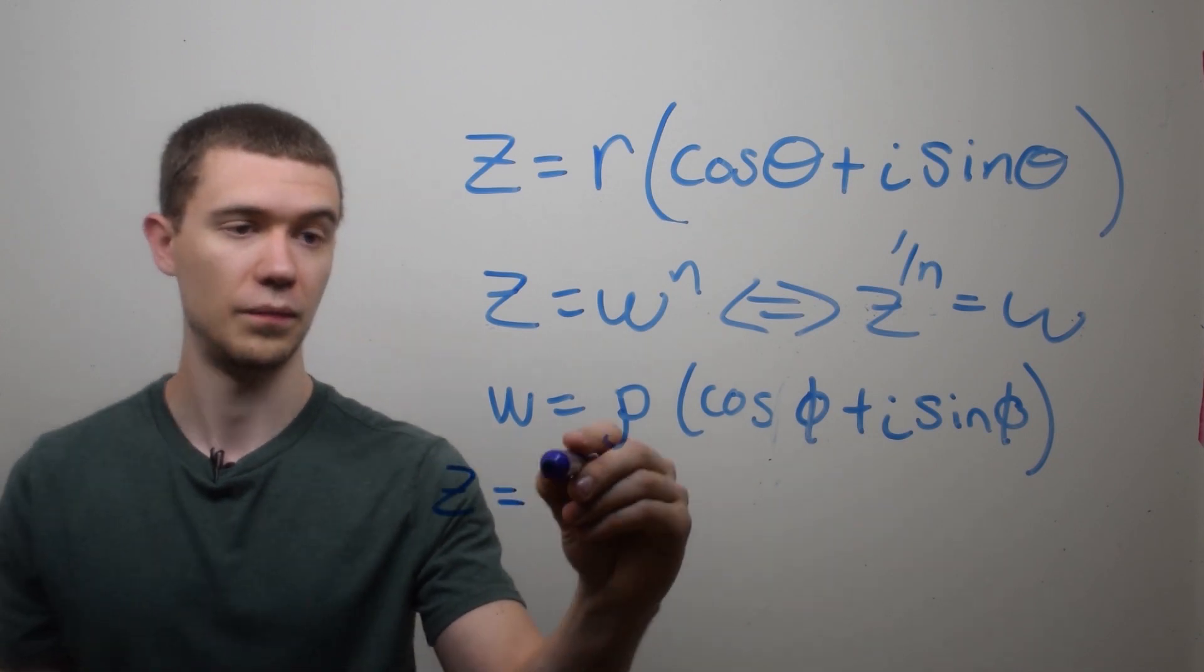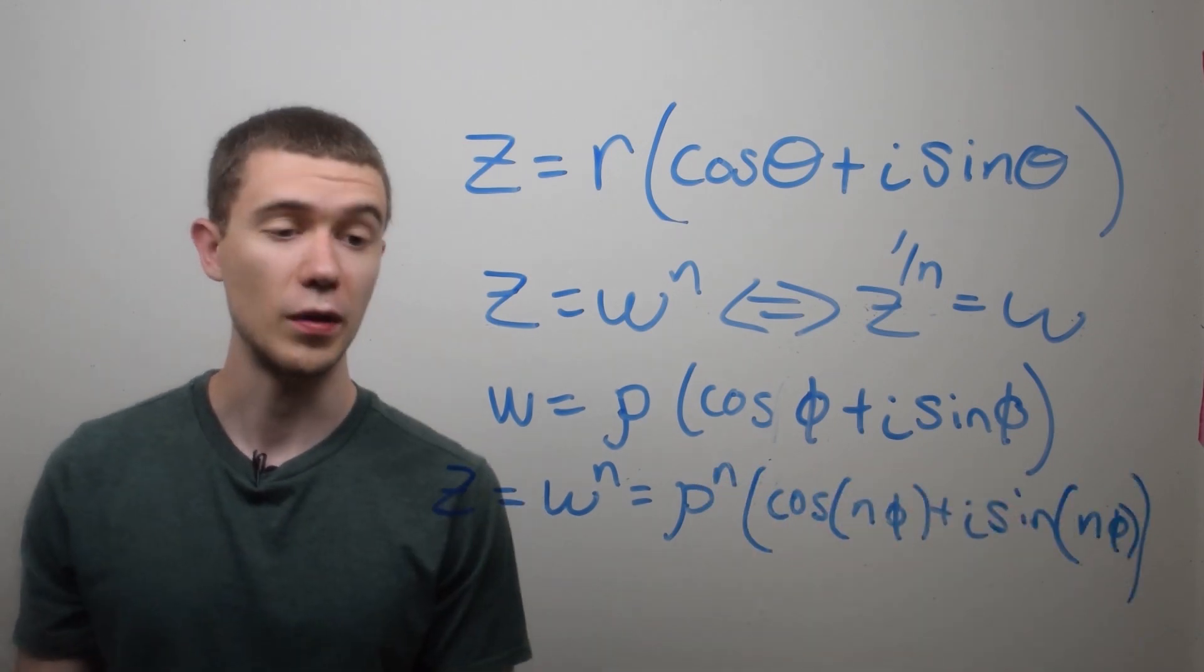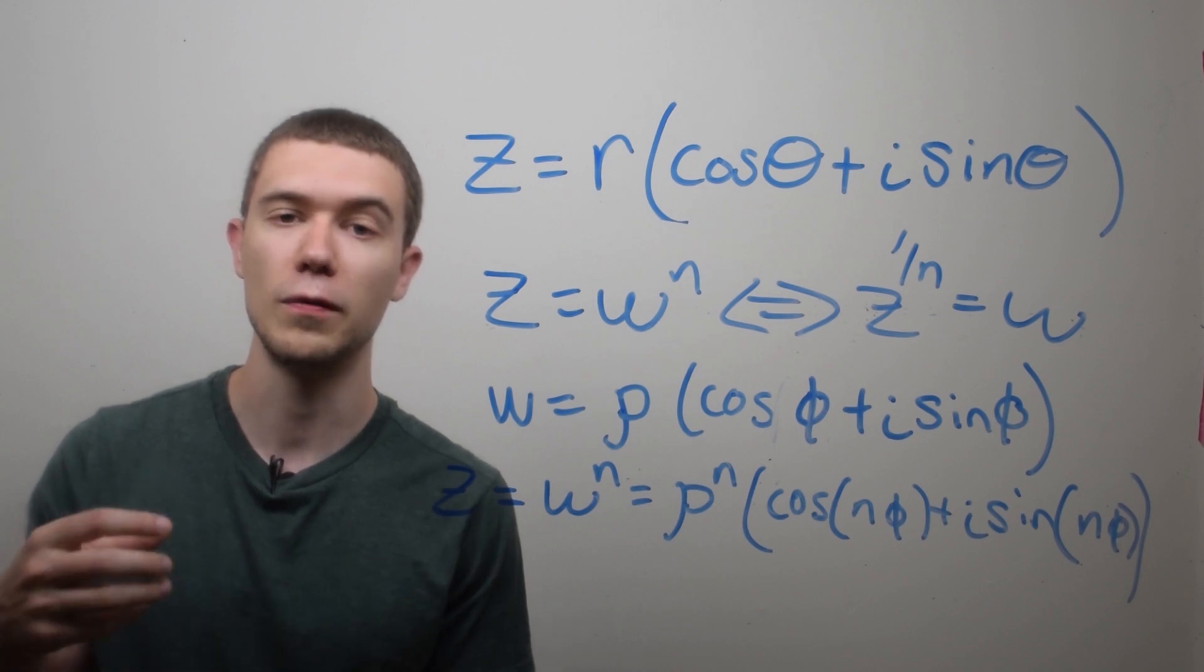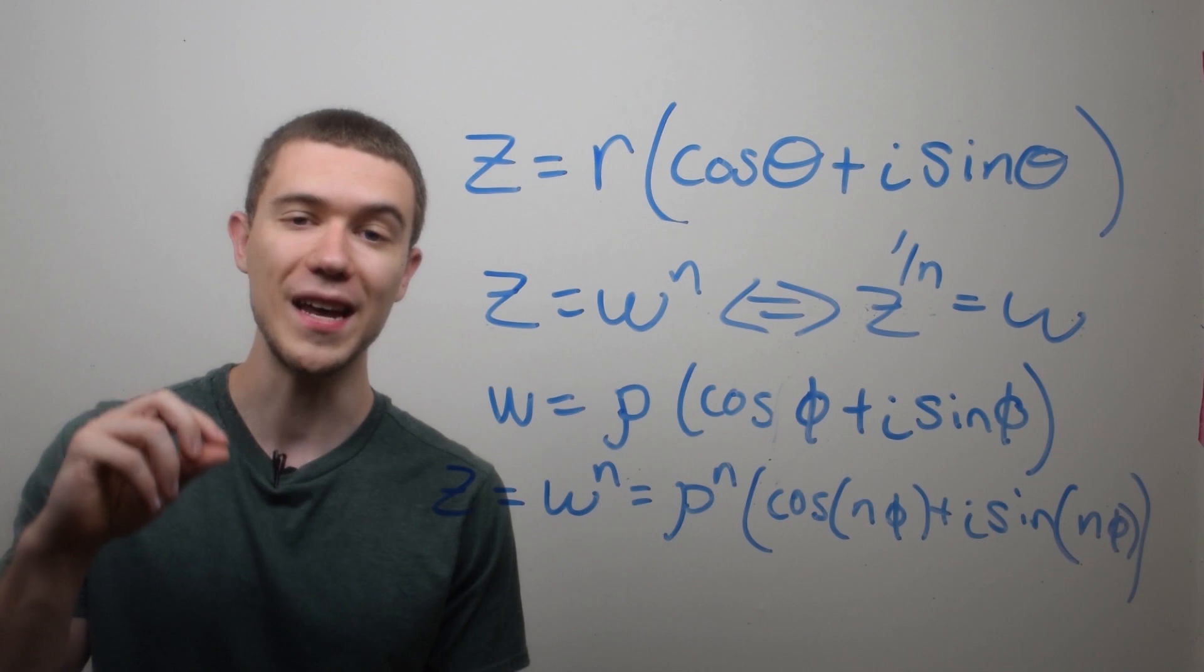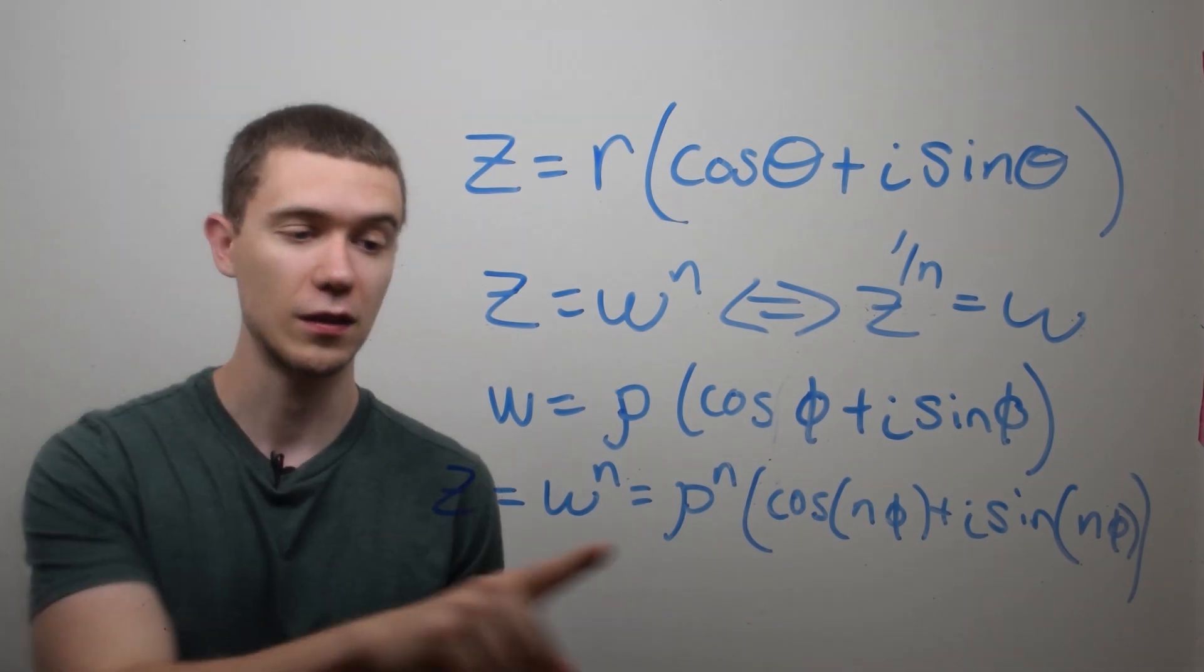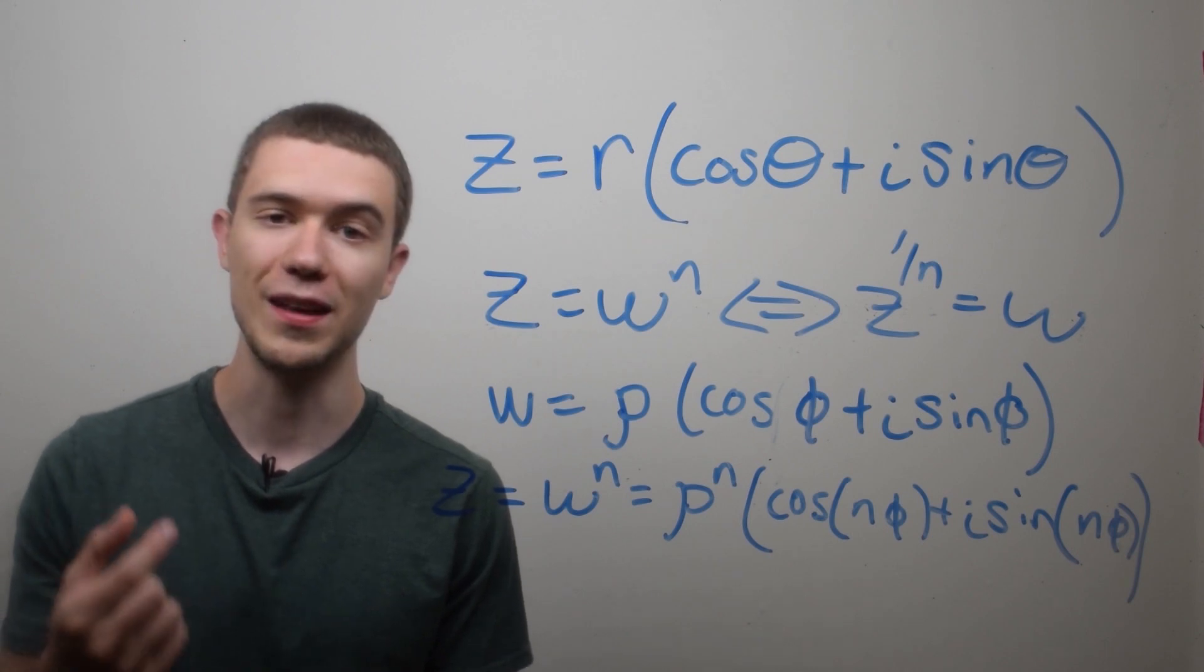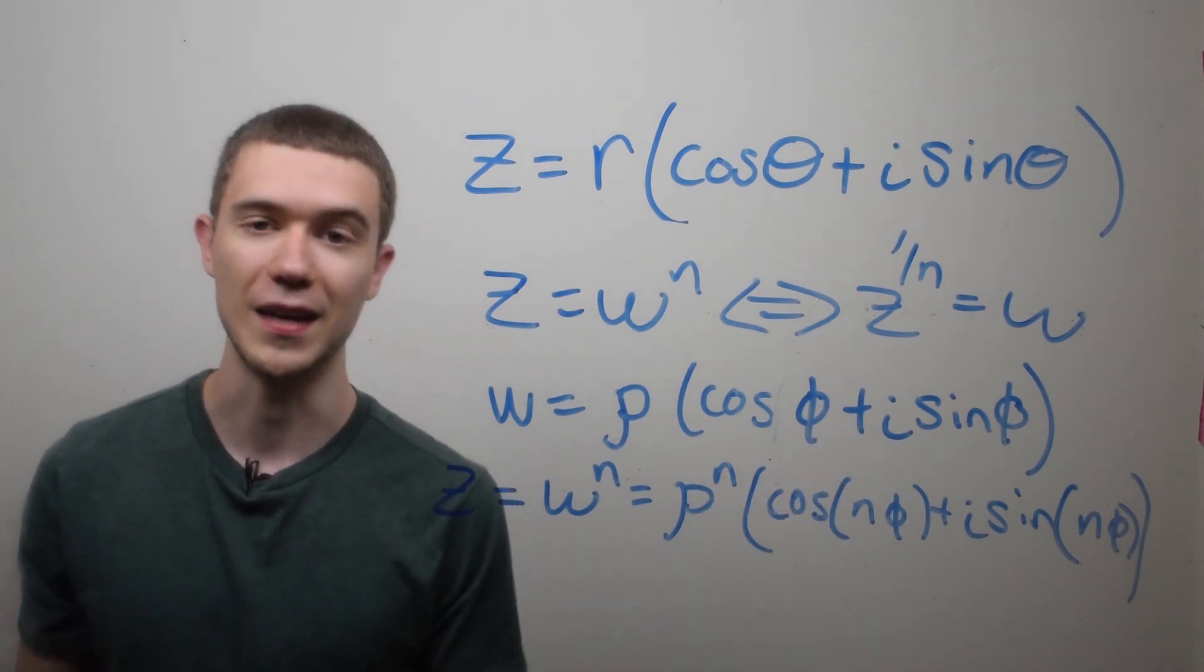Now if I raise w to the n, if you remember how to use de Moivre's formula, or if you refer to my last video about how to take powers of complex numbers, we take the power of the modulus. So we just raise rho to the n power, and we also multiply the argument by n. So this phi turns into n phi.